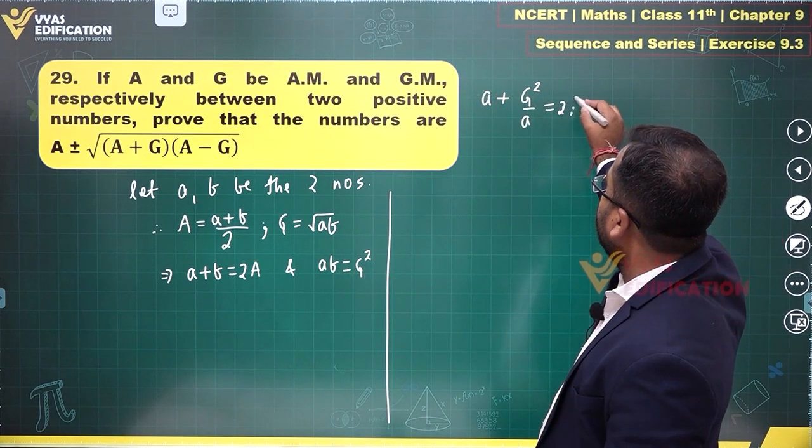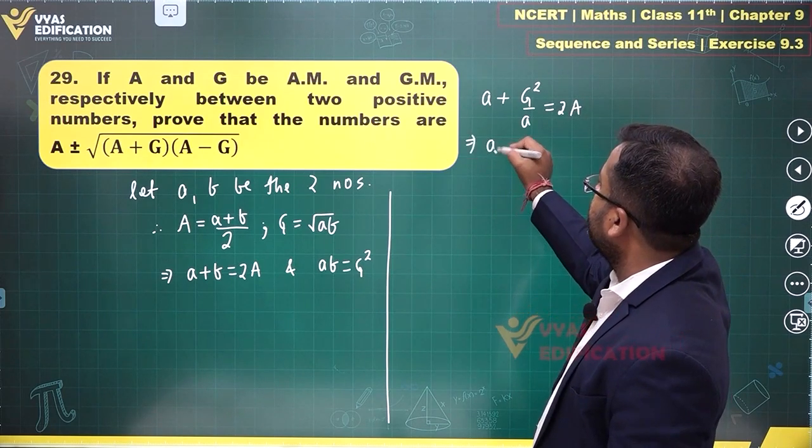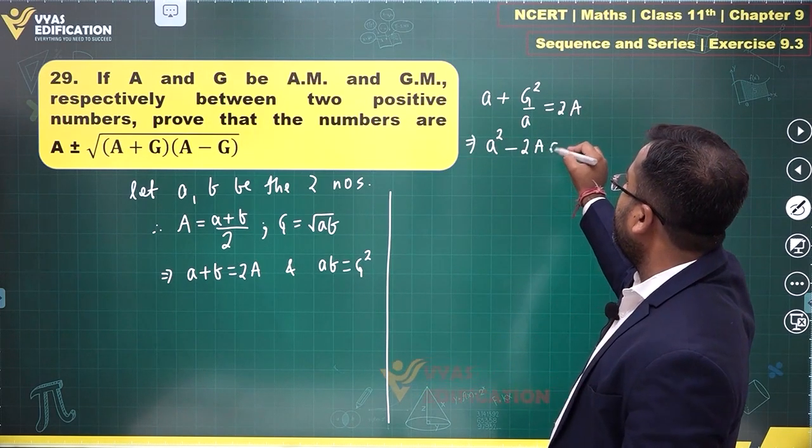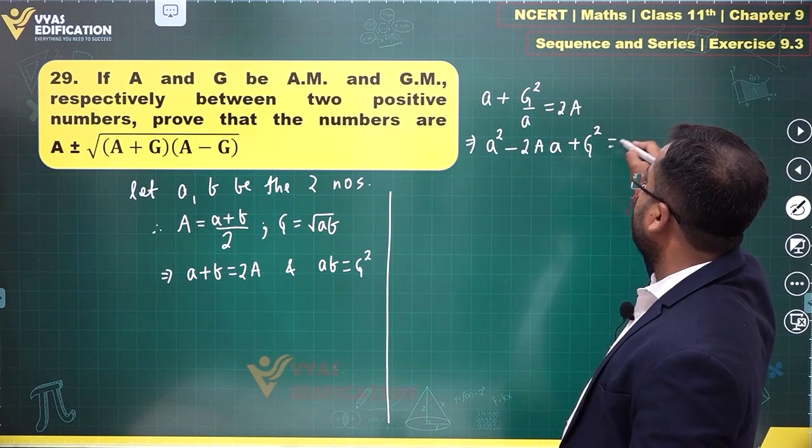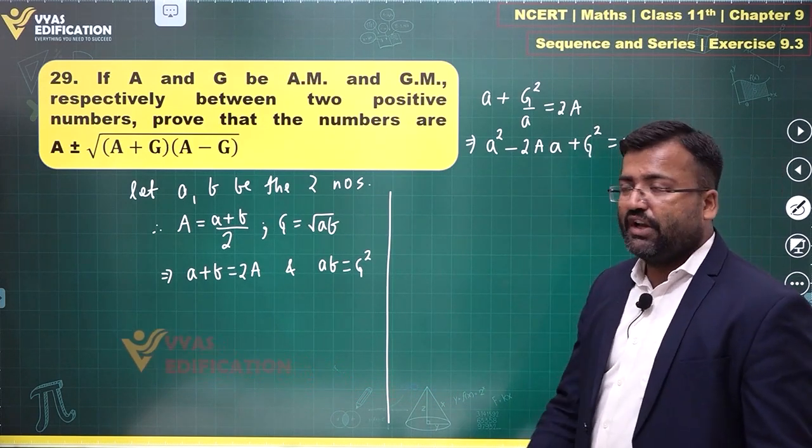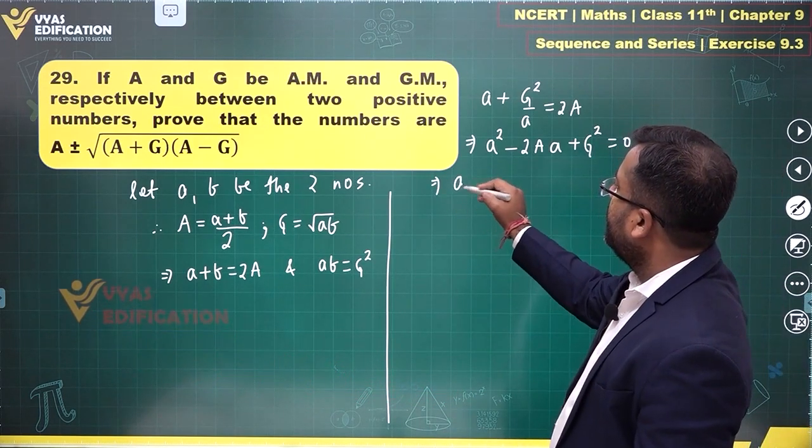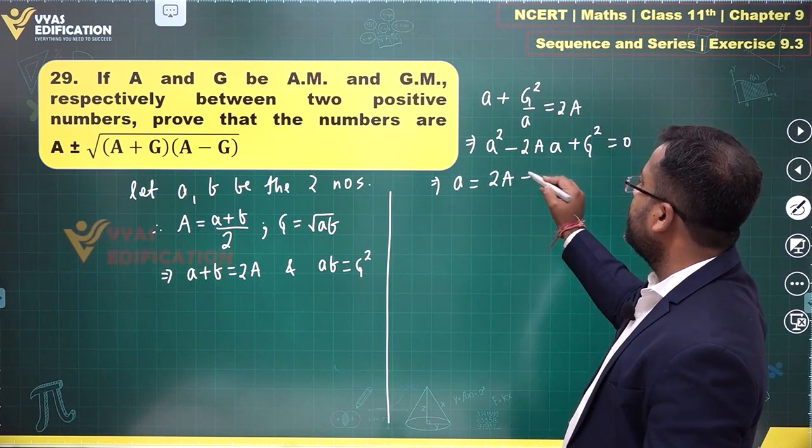= 2A. From here I observe: a² - 2Aa + G² = 0. This is a quadratic in a. Using the quadratic formula: a = (-b ± √(b² - 4ac))/(2a).